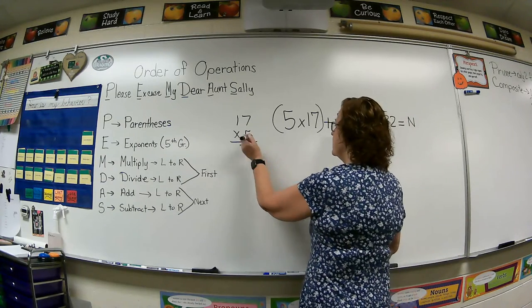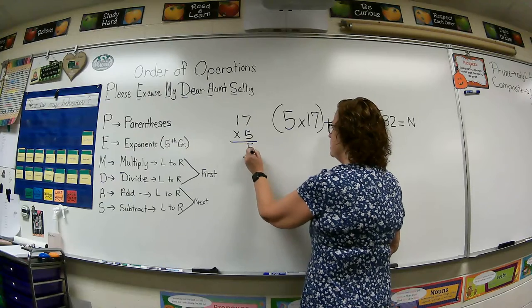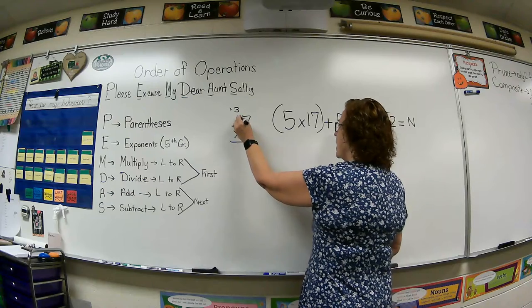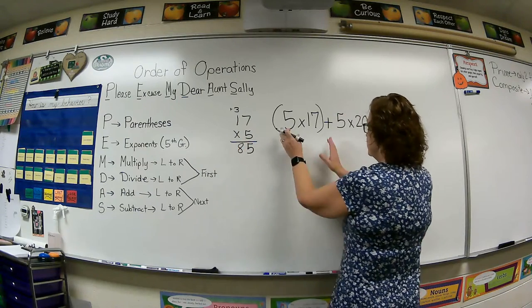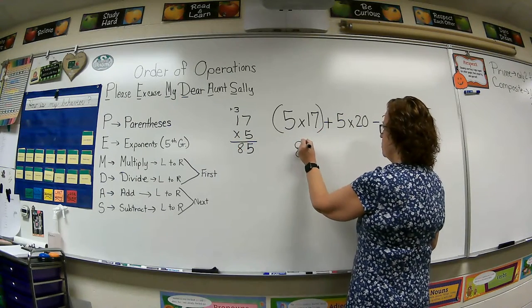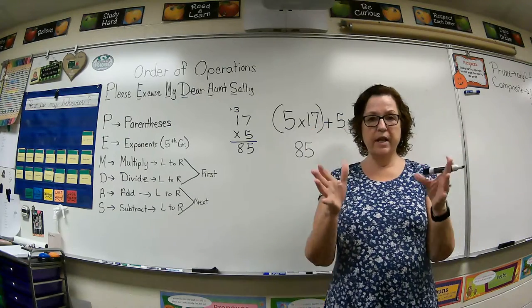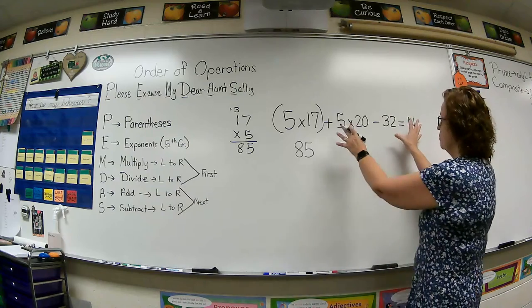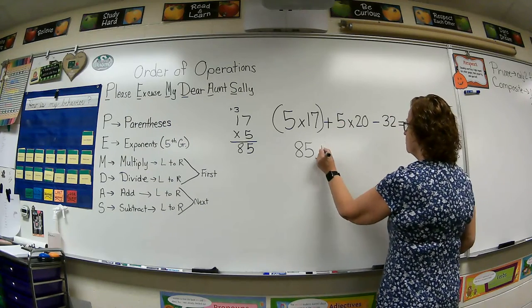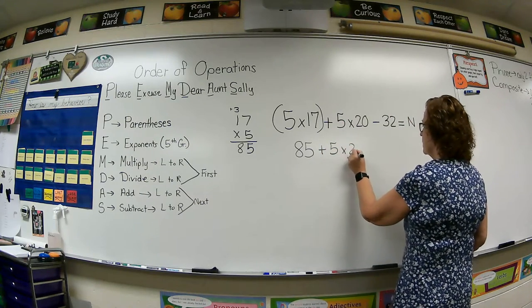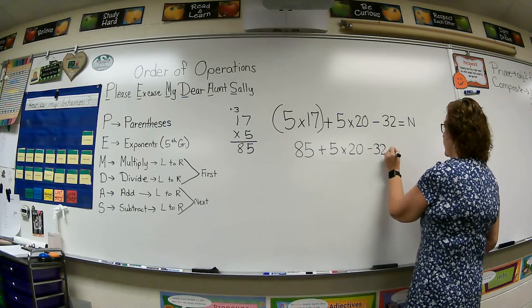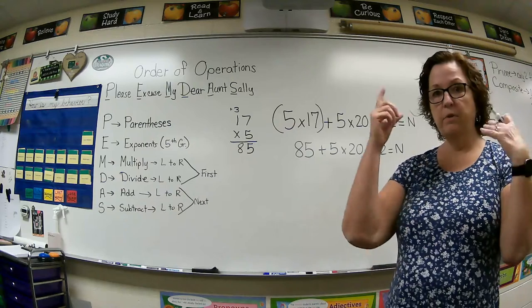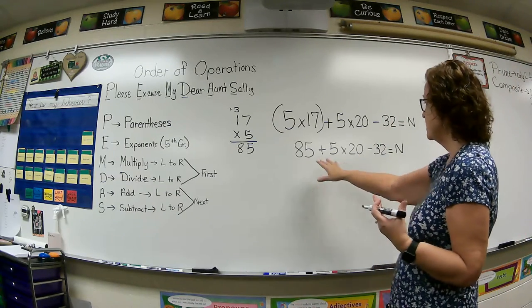So 5 times 7 is 35. Carry your 3. We're going to add that in later. 5 times 1 is 5 plus 3 is 85. So underneath of this, we're going to write 85. Now we work our equations going down and down until we get to the final answer. So I'm going to just bring the rest of this down. And we have a brand new equation to look at. So I'm going to look at it with new eyes. And I'm going to look across.